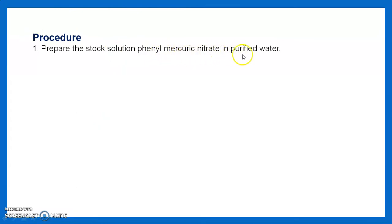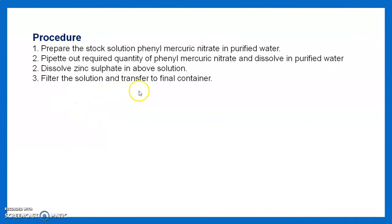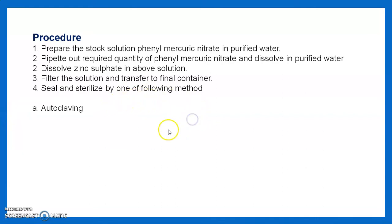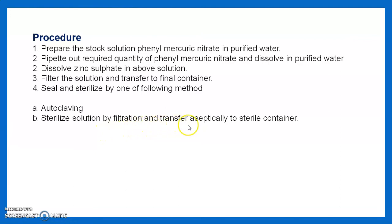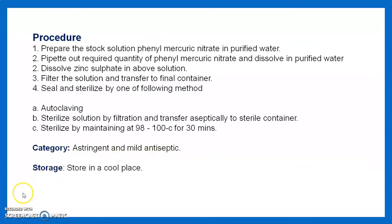Procedure: prepare the stock solution of phenyl mercuric nitrate in purified water. Pipette out the required quantity and dissolve in purified water. Dissolve zinc sulfate in the above solution. Filter the solution and transfer to the final container. Seal and sterilize by autoclaving, or by filtration and aseptic transfer to a sterile container, or by maintaining 98 to 100°C for 30 minutes. Category: astringent and mild antiseptic. Storage: cool place, well-closed container.